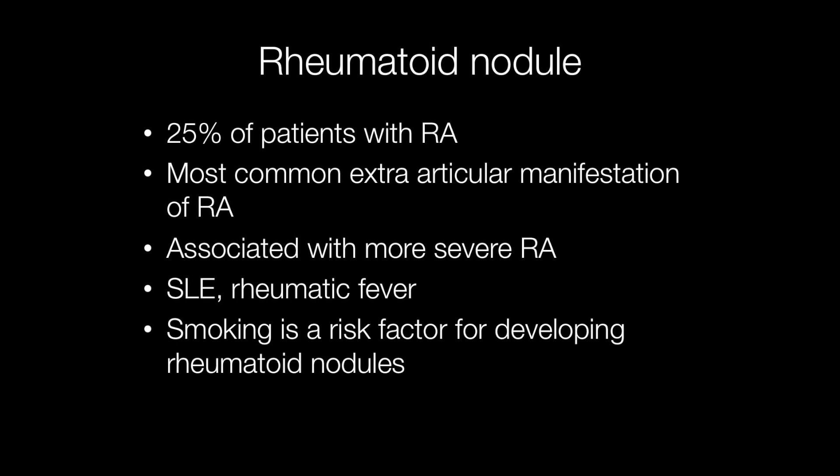Rheumatoid nodules arise in at least 25% of patients with rheumatoid arthritis and they are the most common extra-articular manifestation of rheumatoid arthritis. They are also associated with more severe cases of RA. Other conditions that rheumatoid nodules can develop in association with include SLE and rheumatic fever, and smoking is a risk factor for developing rheumatoid nodules.